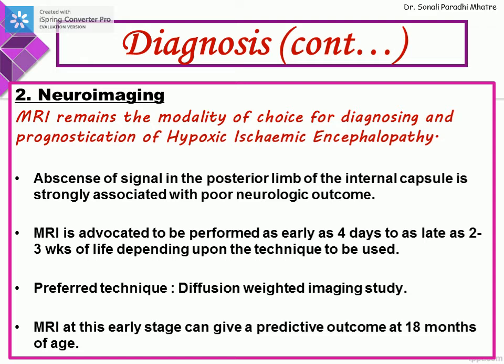MRI remains the modality of choice for diagnosing and prognostication of HIE. Absence of signal in the posterior limb of the internal capsule is strongly associated with poor neurologic outcome. MRI is generally advocated to be performed as early as 4 days to as late as 2–3 weeks of life depending on the technique. Preferred technique is diffusion-weighted imaging, which can immediately point out areas of the brain affected. MRI at this early stage can give a predictive outcome at 18 months of age.